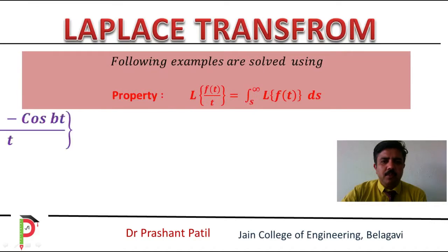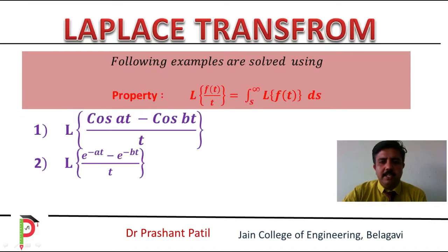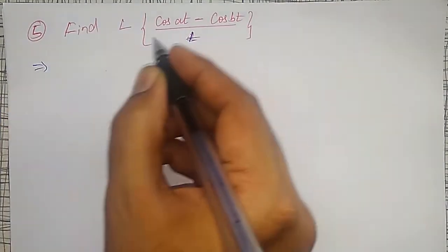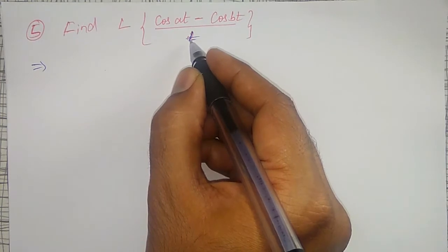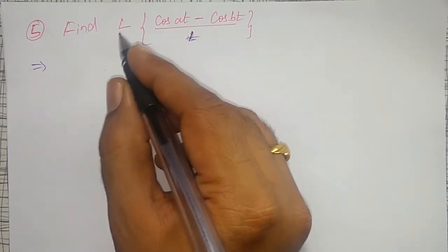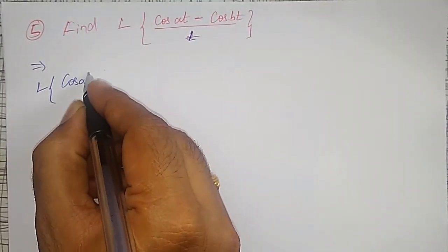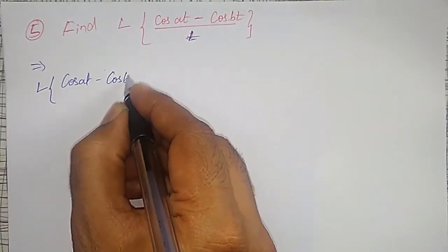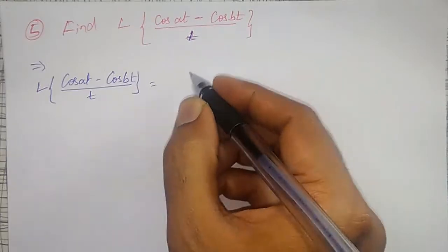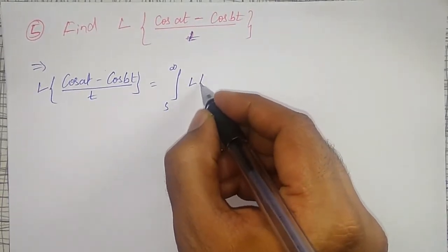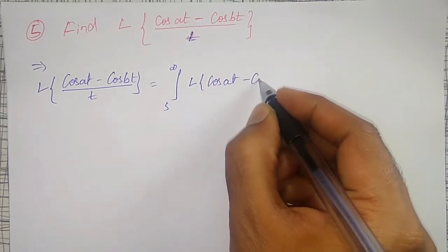Using the property: Laplace Transform of f(t) divided by t transforms as integration from s to infinity of L{f(t)} ds. Therefore, the Laplace Transform of cos(at) minus cos(bt), whole divided by t, will transform as integration from s to infinity of the Laplace Transform of cos(at) minus cos(bt).